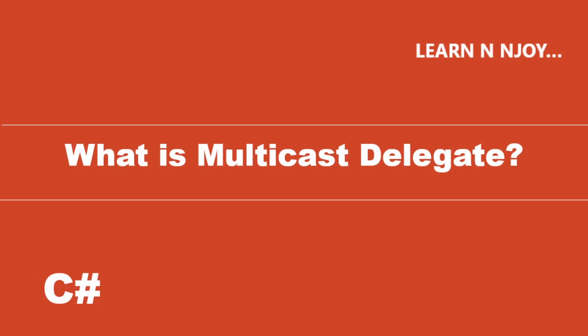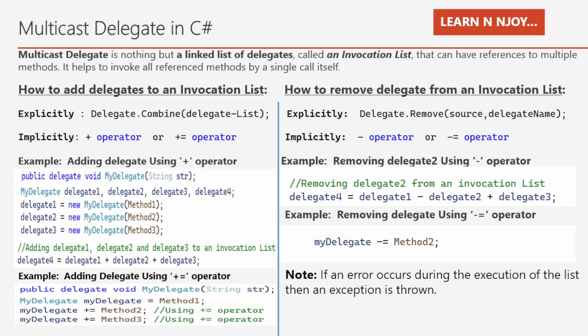What is a Multicast Delegate? A Multicast Delegate is nothing but a linked list of delegates called an invocation list that can have references to multiple methods. It helps us to invoke all referenced methods by a single call itself.